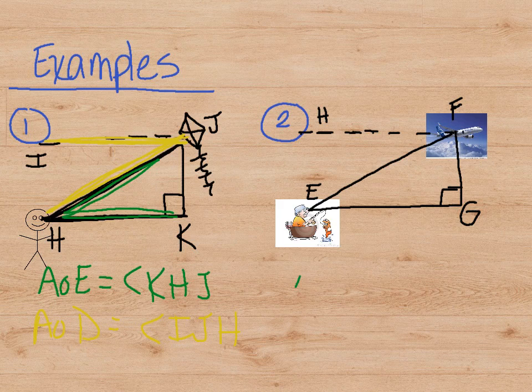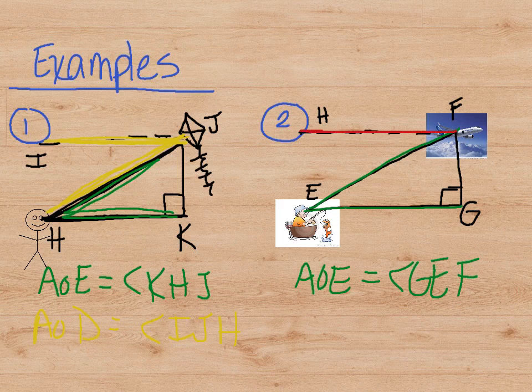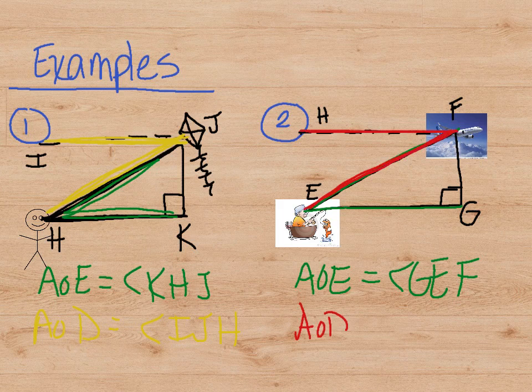Alright, the angle of elevation is the dude looking straight ahead to the airplane. So angle of elevation would be GEF. And then the angle of depression would be someone looking straight ahead from the airplane down at the guy in the boat. So angle of depression would be HFE.